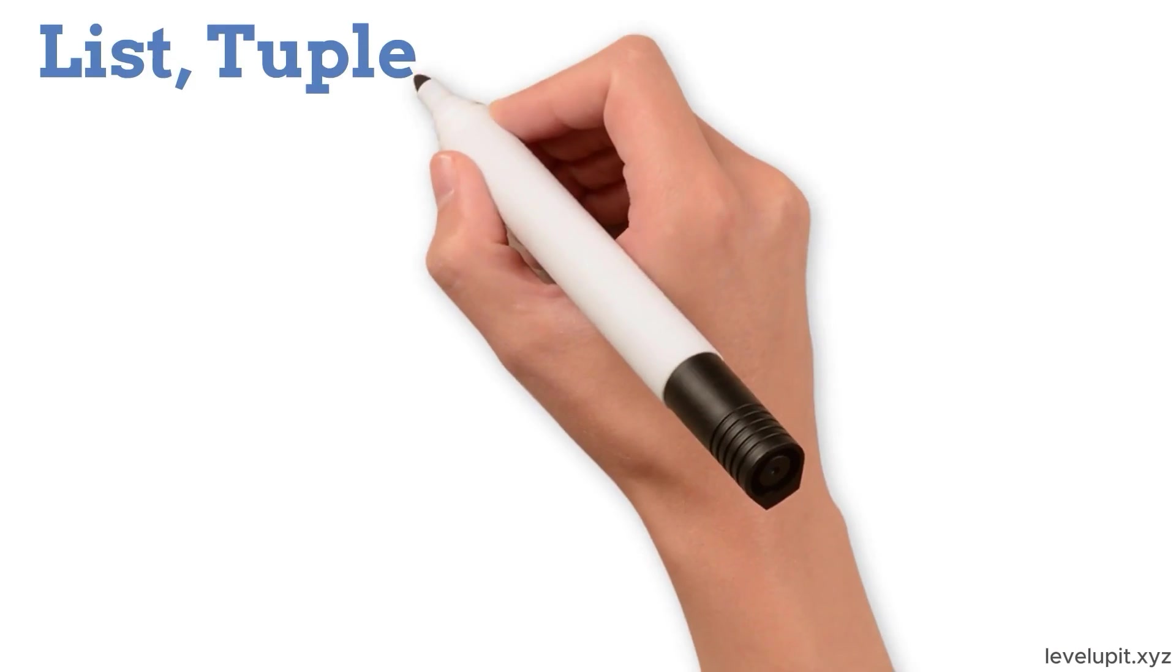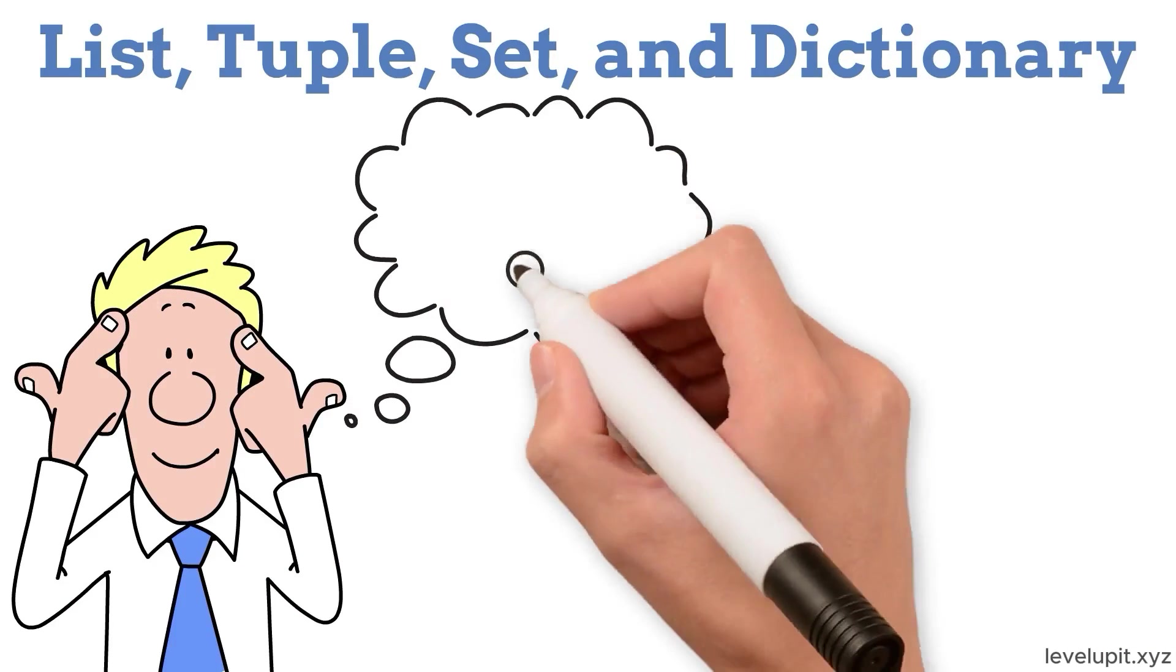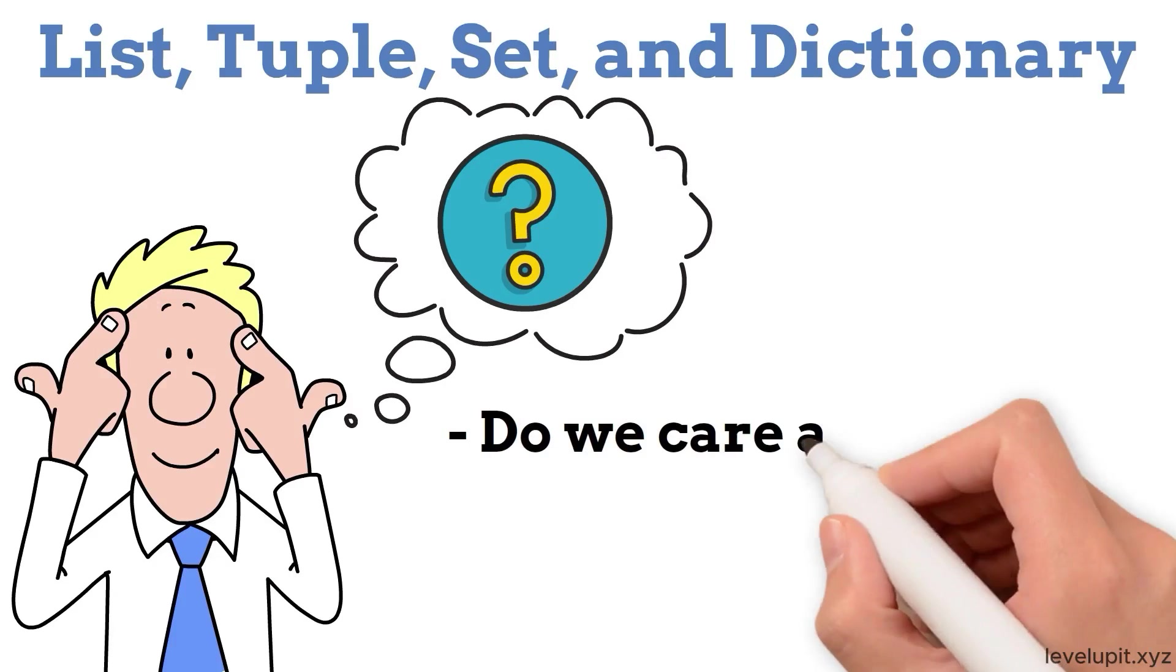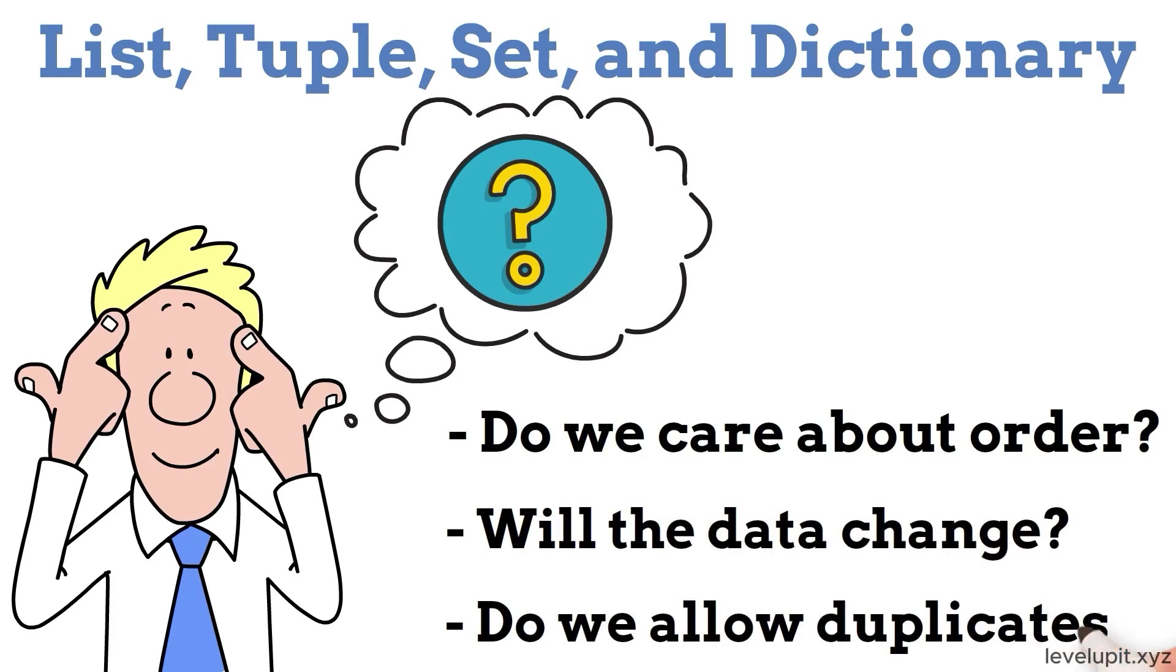There are four everyday containers: list, tuple, set, and dictionary. Think of them as tools that answer three questions. Do we care about order? Will the data change? Do we allow duplicates?